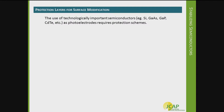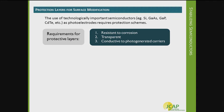Moving on from bismuth vanadate towards technologically important semiconductors like silicon, gallium arsenide, gallium phosphide and others — these materials require protection schemes because they're naturally very prone to photo corrosion. This seems like a pretty simple idea: coat something on top of your semiconductor to protect it from corrosion. But it's actually fairly complicated, which is one reason it hasn't been successfully done in the last 30 or 40 years. Requirements for photoelectrochemical protection layers include resistance to corrosion, transparency to allow photons to reach the underlying semiconductor, and conductivity to photo-generated carriers.